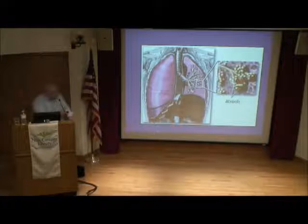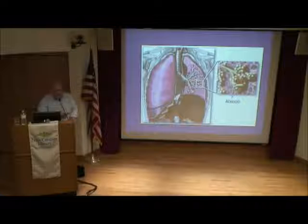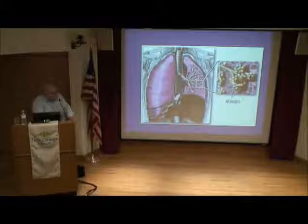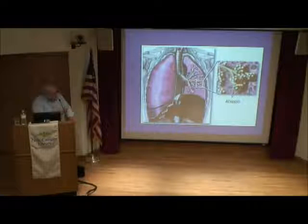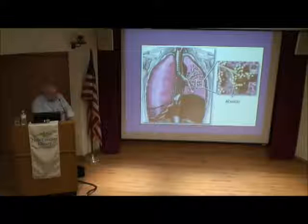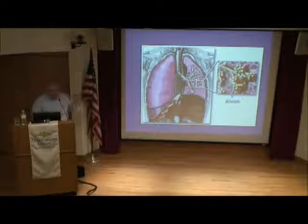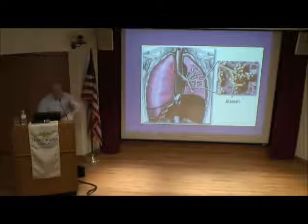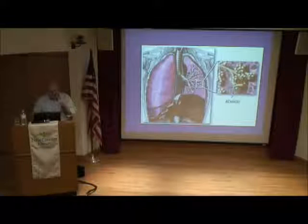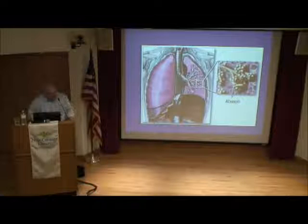Within the lung, the airways are a series of small highways that keep dividing. Starting with the trachea, airways divide into bronchi, which keep subdividing until reaching very small sacs that look like a bunch of grapes, called alveoli. It is within the alveoli that oxygen and carbon dioxide exchange occurs.